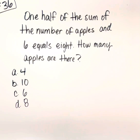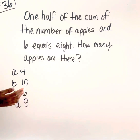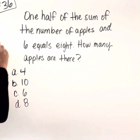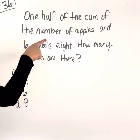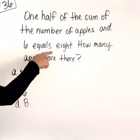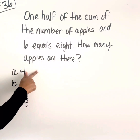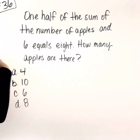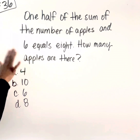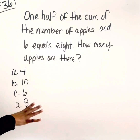Let's take a look at question number 36, which is a combination of translating sentences into expressions, equations, and inequalities, as well as solving. The question says: one half of the sum of the number of apples and six equals eight. How many apples are there? So in this instance, we have to actually create the equation, and then once we have the equation, we have to solve.